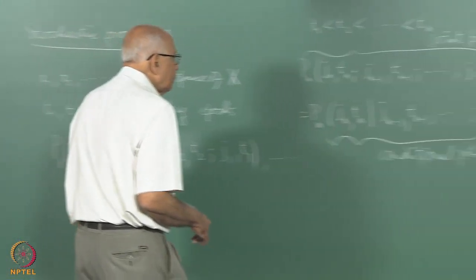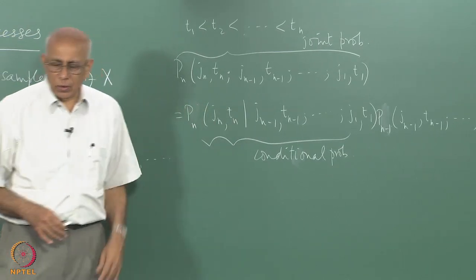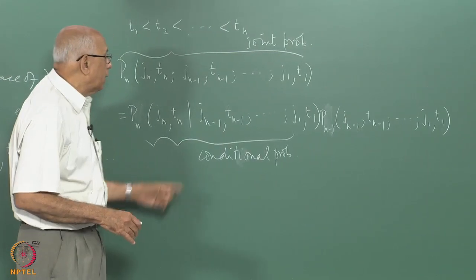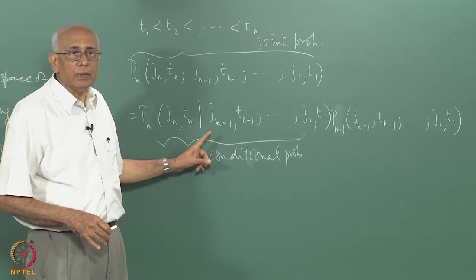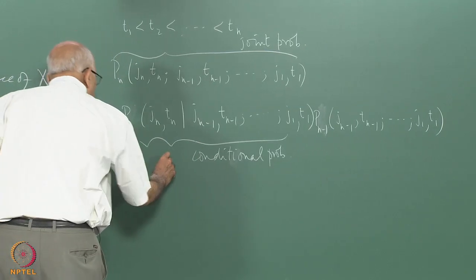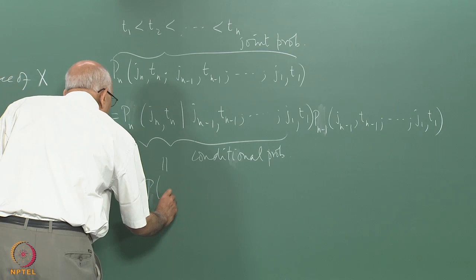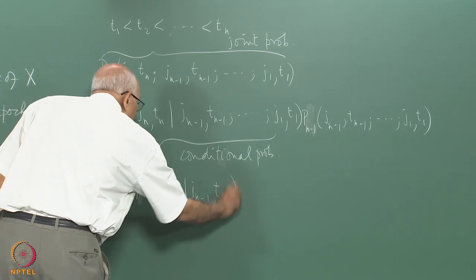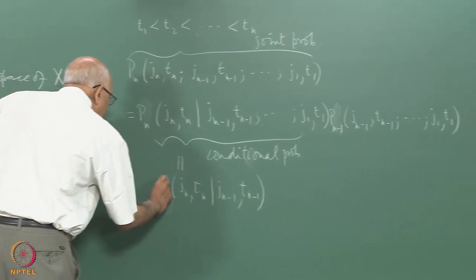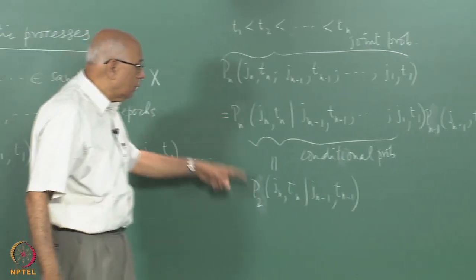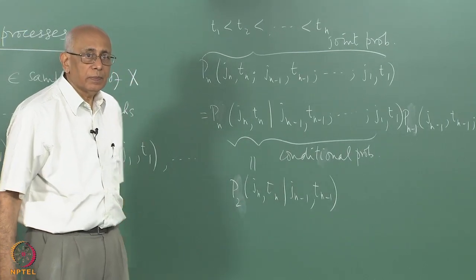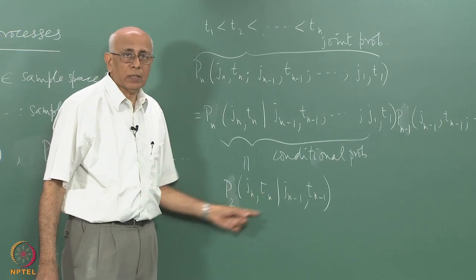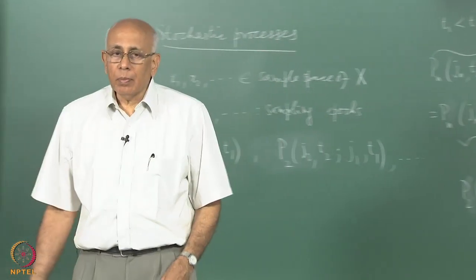This experience tells us it may be worthwhile looking at those stochastic processes where the conditional n-time probability is not dependent on earlier variables other than the one immediately preceding. So if this conditional probability equals just the two-time probability p2(jn, tn | jn−1, tn−1) for all n — so p3, p4, p5, etc., every one of those gets truncated to just this two-time conditional — then it is called a Markov process.